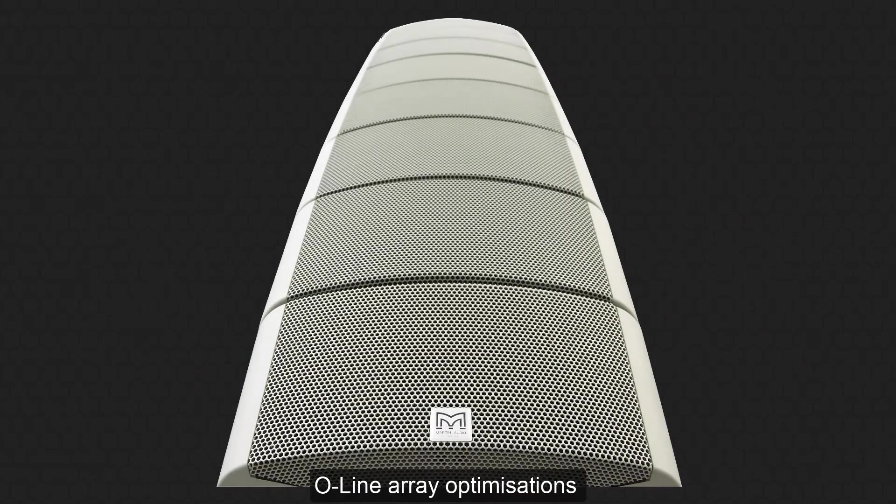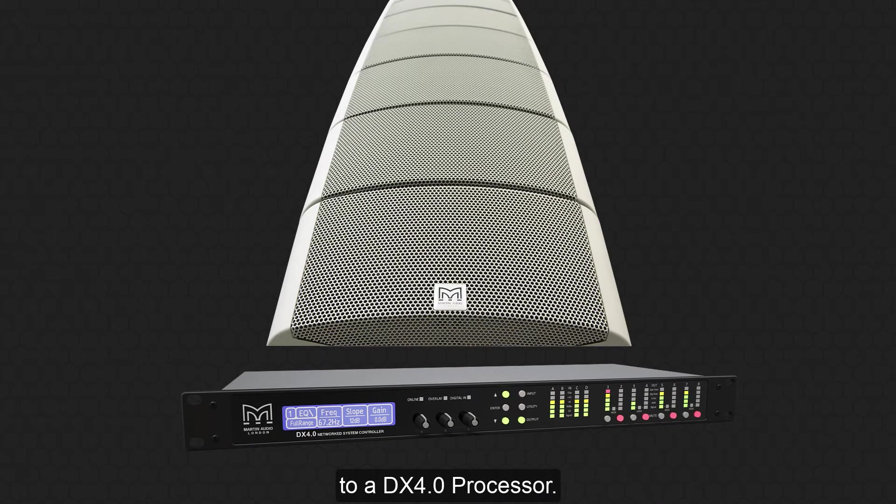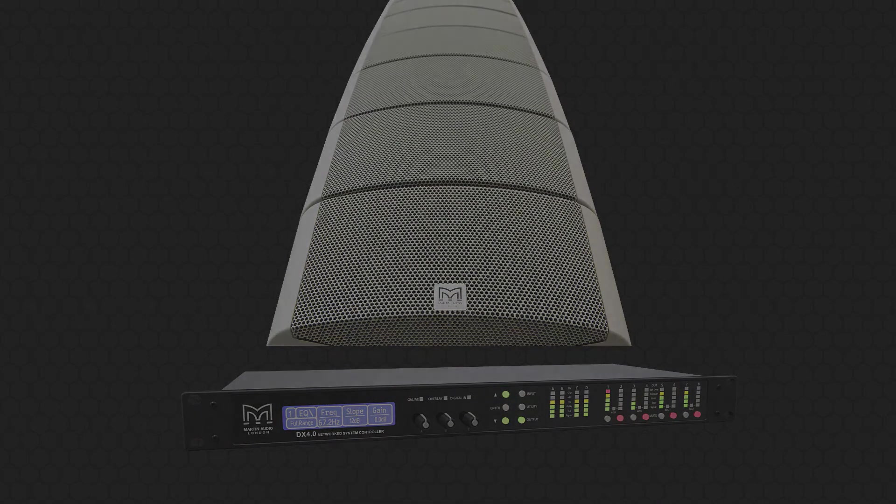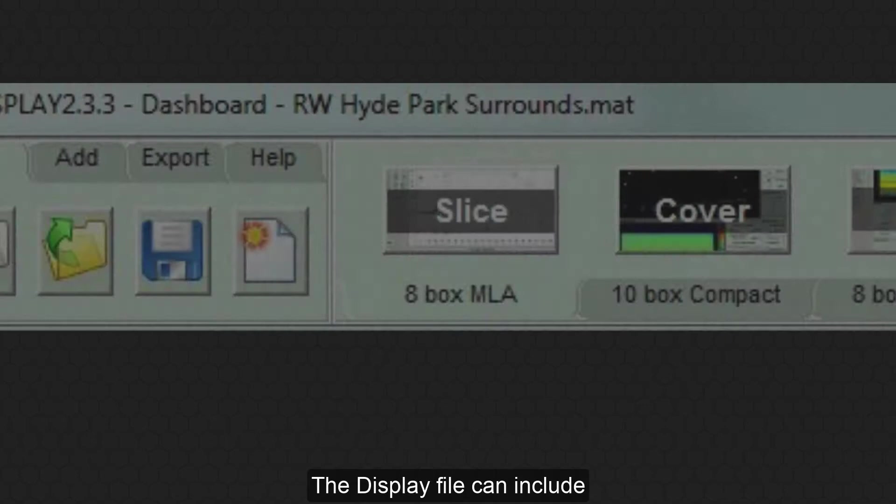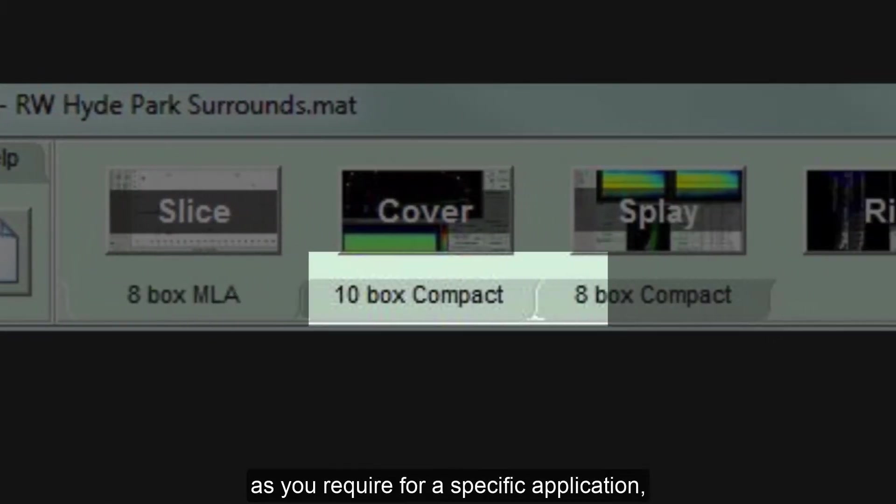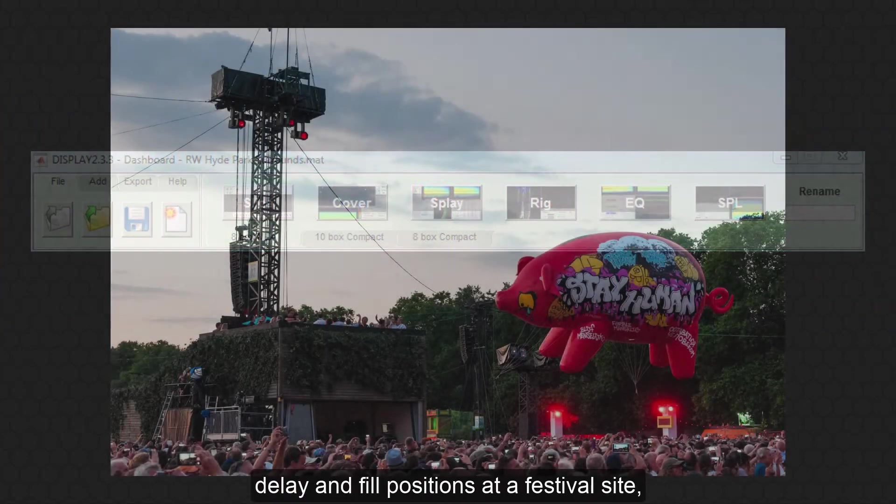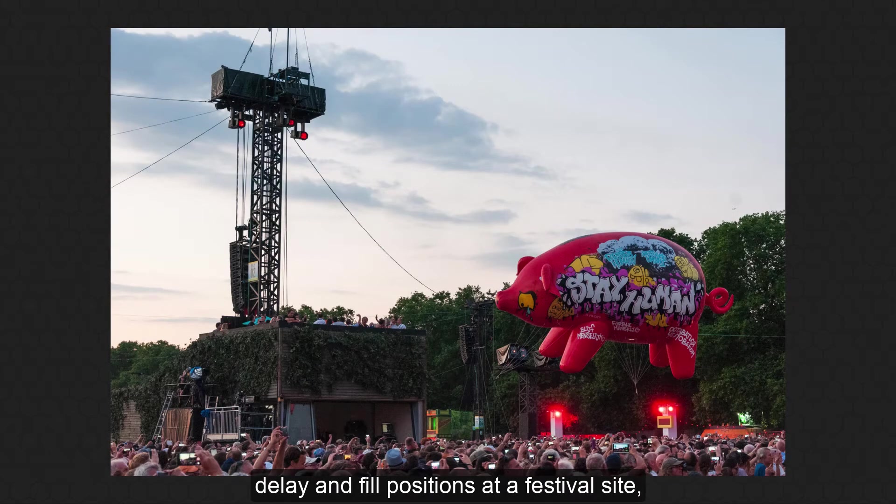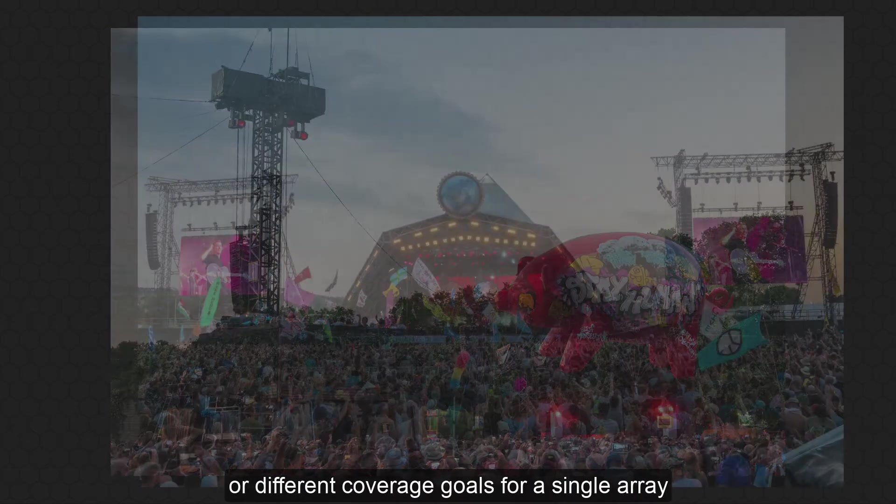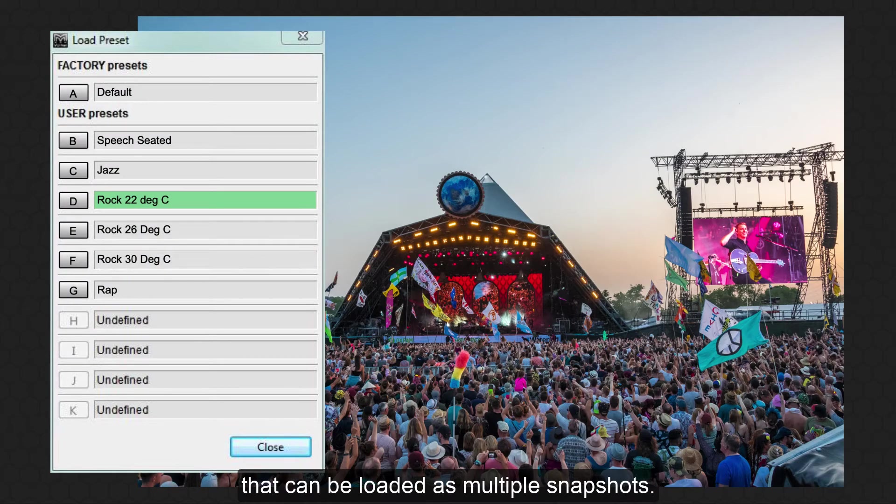O-line array optimizations can also be uploaded to a DX 4.0 processor. The display file can include as many array configurations as you require for a specific application, whether that is delay and fill positions at a festival site or different coverage goals for a single array that can be loaded as multiple snapshots.